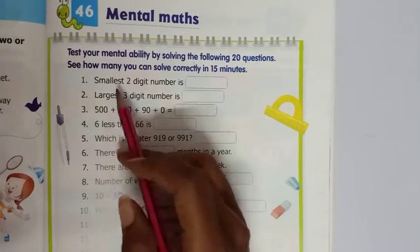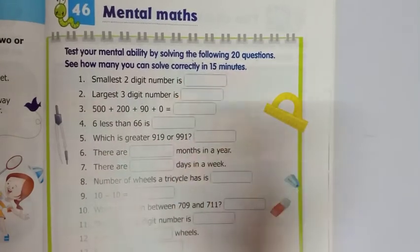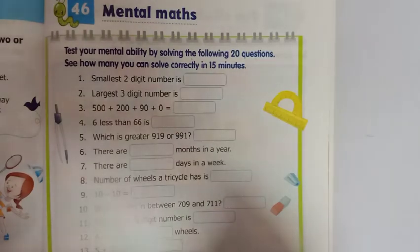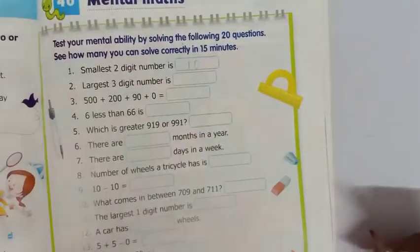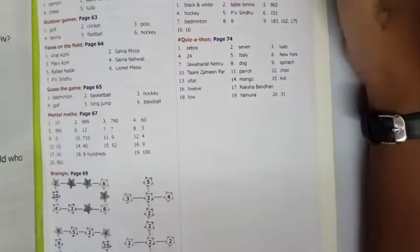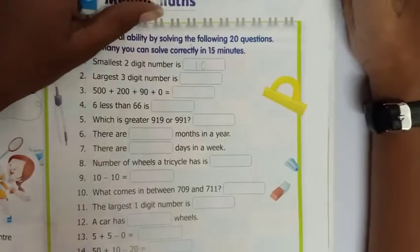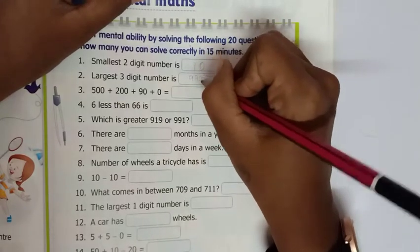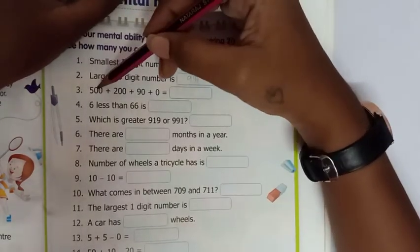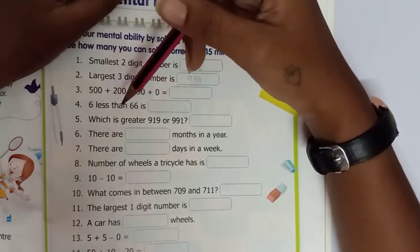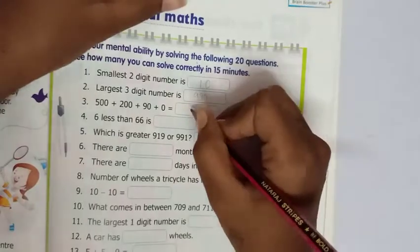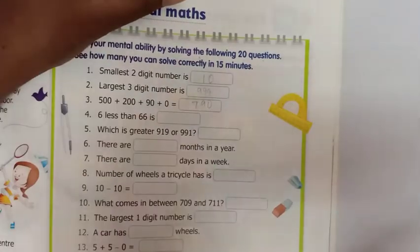The first question is the smallest two-digit number is? The smallest two-digit number is 10. The largest three-digit number is? Triple 9. 500 plus 200 plus 90 plus 0, that is 790. 6 less than 66 is 60.